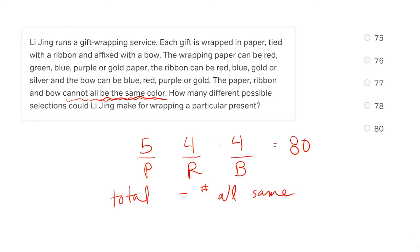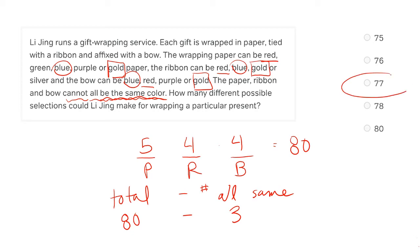We could try to find all permutations where they're all different, or where two match, and add those up — but we should notice there is only one thing that's not allowed: all the same color. So let's use our rule again: take our total of 80 options and subtract the number of options where they're all the same color. The only all-same-color options are all red, all blue, or all gold — just three options. So 80 minus 3 gives us the correct answer of 77.